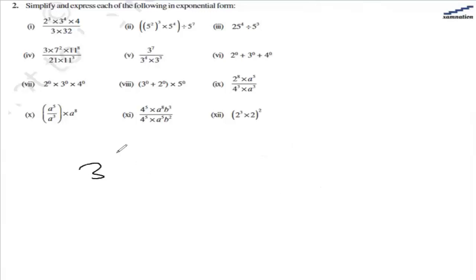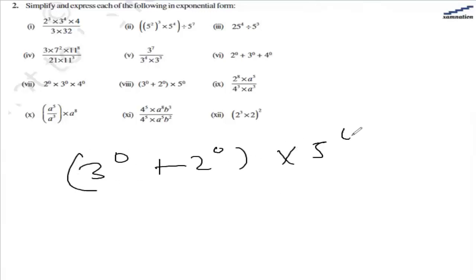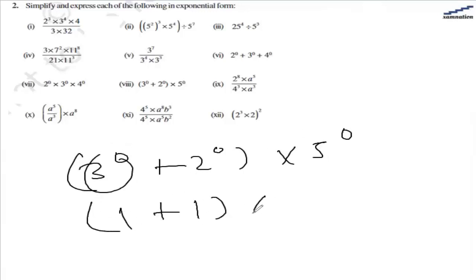In the eighth part, we have 3 raised to the power of 0 plus 2 raised to the power of 0, and this whole is getting multiplied by 5 raised to the power of 0. Each of these is equal to 1, so we have 1 plus 1 equals 2, and it is getting multiplied by 1. So the answer is 2.